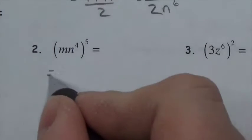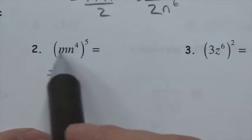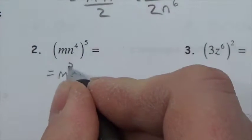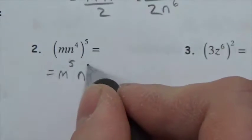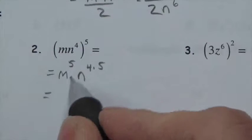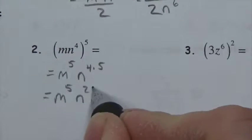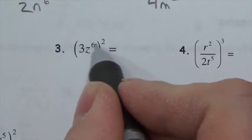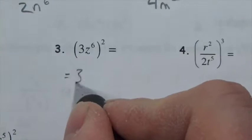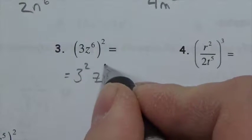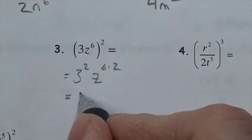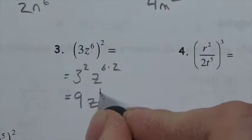As long as you've got factors — only one term inside — you can take the exponent and distribute it to each factor. So (m n to the fourth) to the fifth becomes m to the fifth times n to the twenty. For (3z cubed) squared: the 2 distributes to each factor, giving 3 squared times z to the six times two — that's 9z to the twelfth.